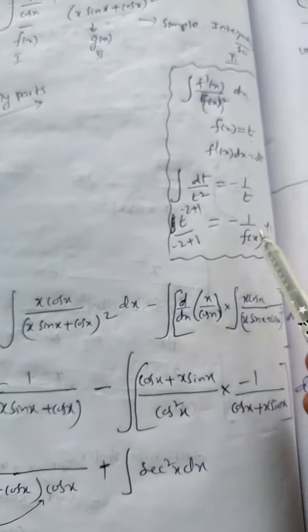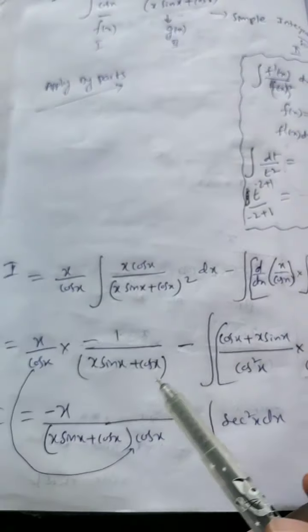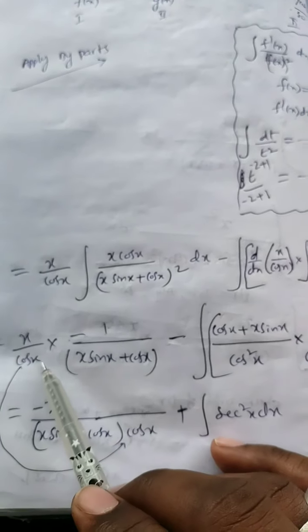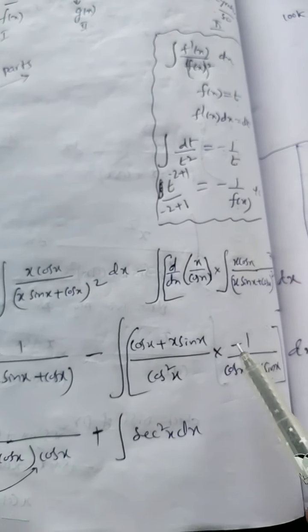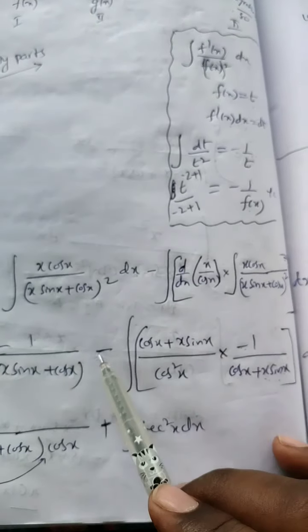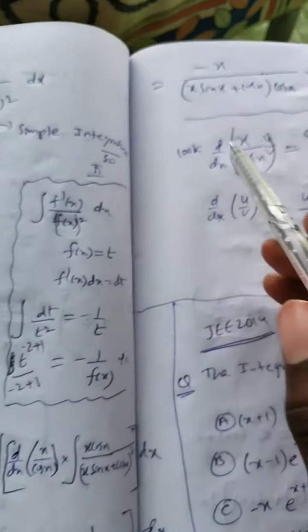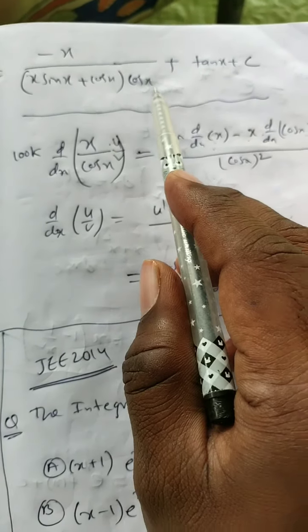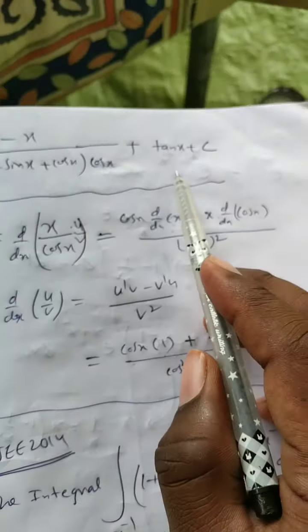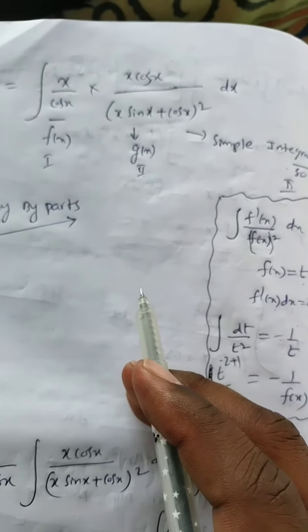Substituting everything: I = (x/cos x) · [−1/(x sin x + cos x)] − ∫ [(cos x + x sin x)/cos²x] · [−1/(x sin x + cos x)] dx. The (cos x + x sin x) terms cancel, leaving ∫ 1/cos²x dx = ∫ sec²x dx = tan x. So the final answer is I = −x / [cos x · (x sin x + cos x)] + tan x + c. This is the answer to this fantastic question.